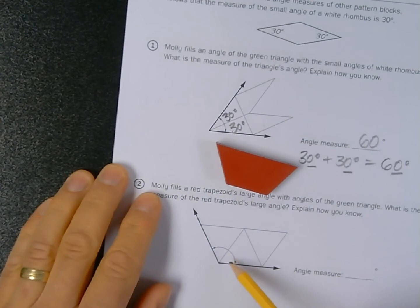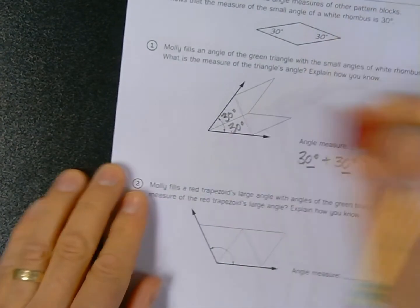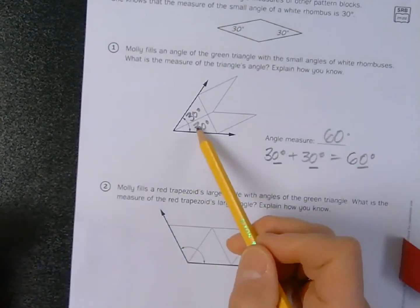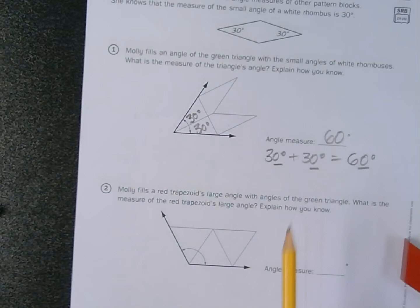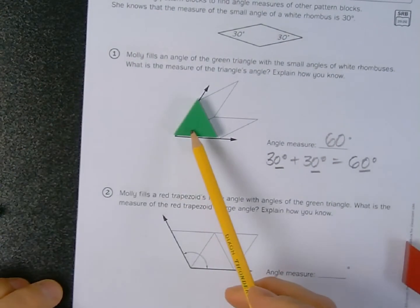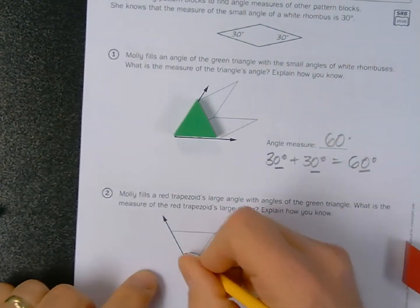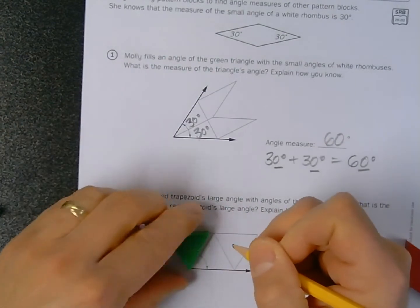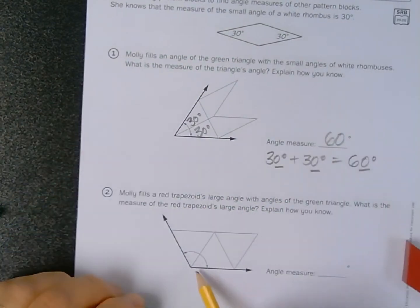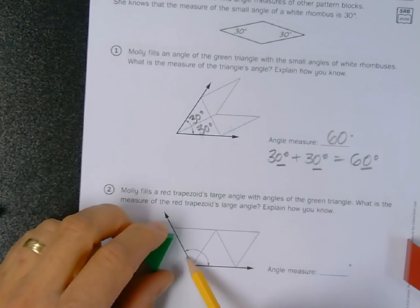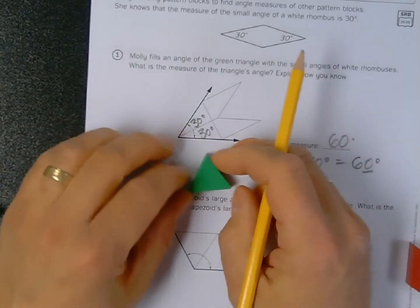I want to know what the measure of this angle is. If I know that 30 plus 30 gives me 60, and this angle of the green triangle is 60 degrees, I know that this angle is also going to be 60 degrees, even though it's pointed in an opposite direction.